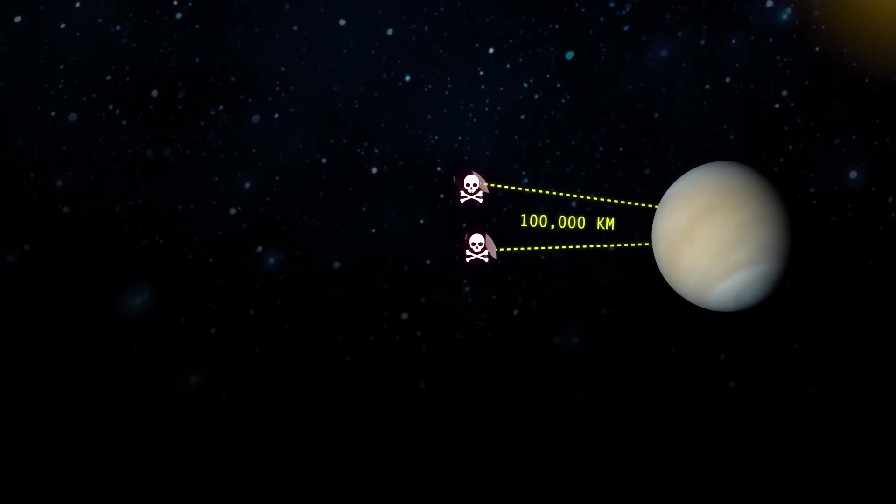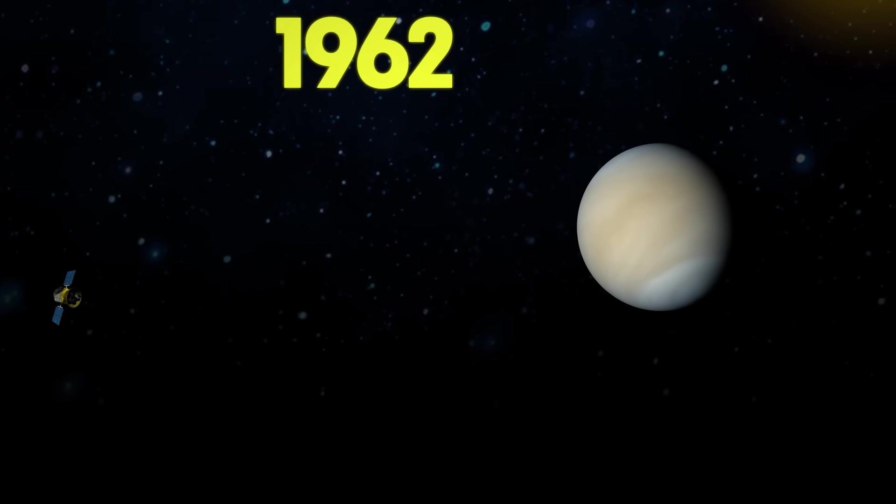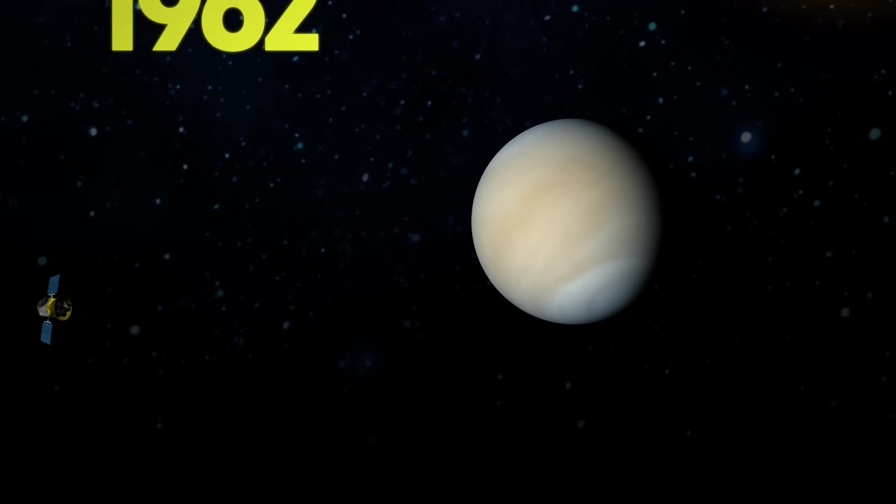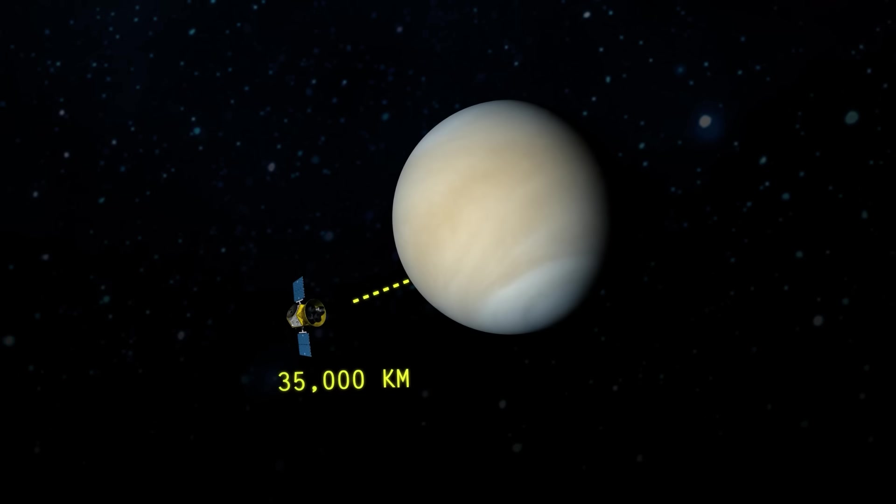While the Soviets went back to the drawing board, NASA pressed on with their own Venus mission. In 1962, the Americans succeeded where the Soviets had failed. NASA's Mariner 2 probe flew within 35,000 kilometers of Venus and completed the first close-up observation of another planet.